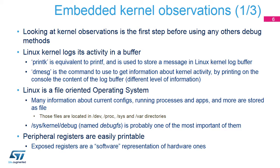Now let's look at basic embedded kernel observations, illustrated by an example around UART configuration. Kernel observation is the first step before using any other debug method. The Linux kernel uses a circular log buffer to store information coming from core components or drivers. PrintK is a basic function used to store messages in this buffer. The simple way to read the content of this buffer is to use the dmesg command. All log messages are classified in different log levels, from 0 to 7.